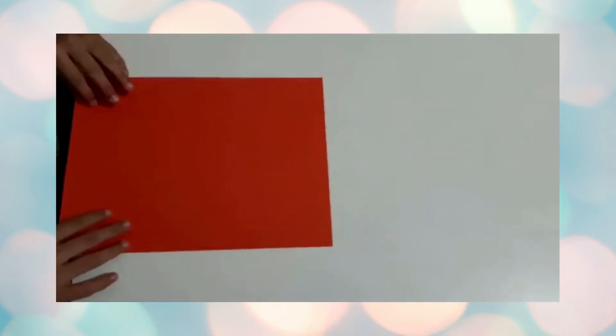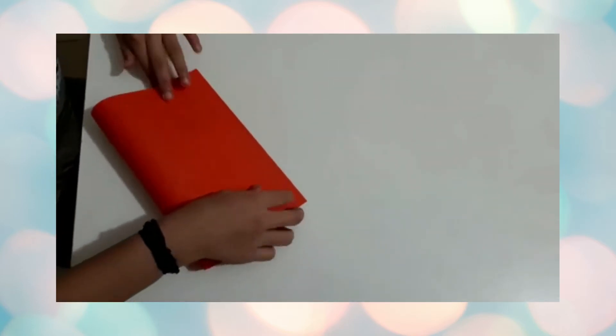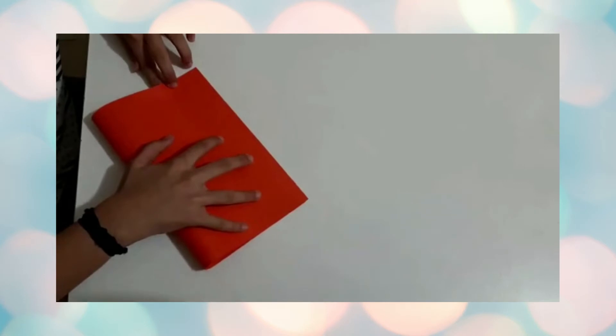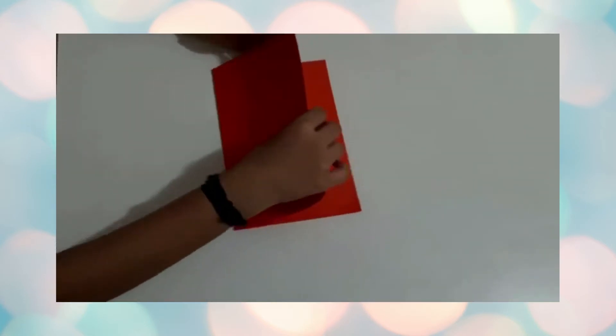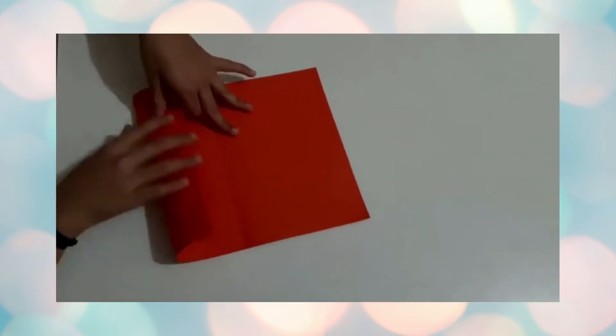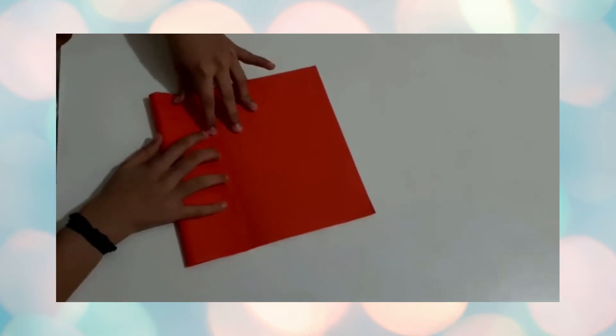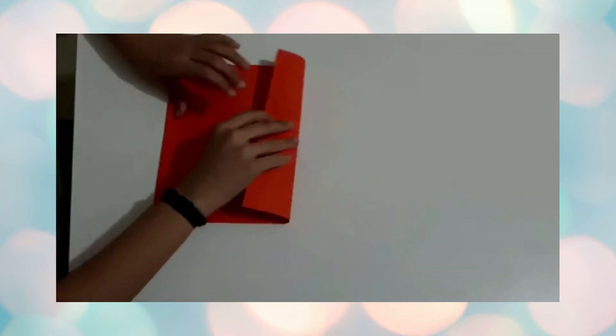I've taken the orange sheet of paper now. And now, we're going to fold it into half. Now, unfold and fold it like this. Now, do the same with the other side as well.